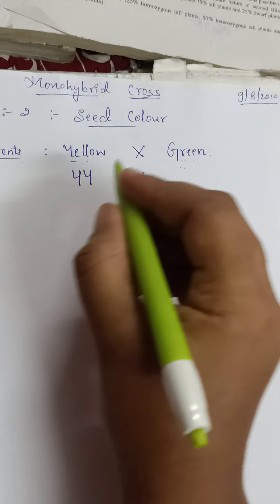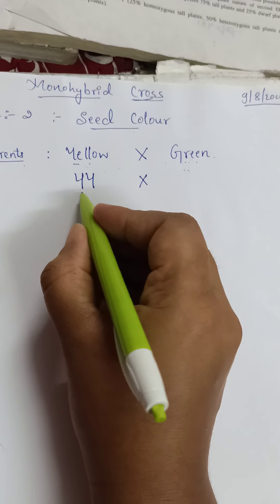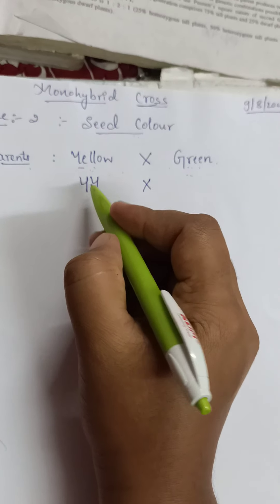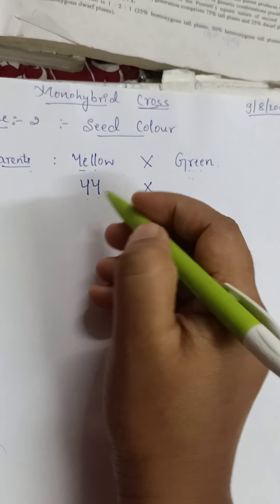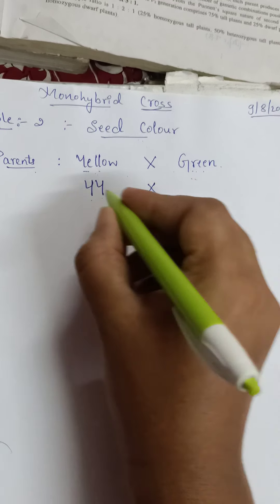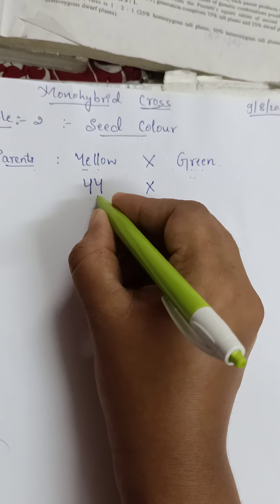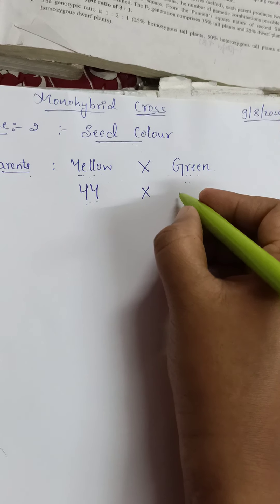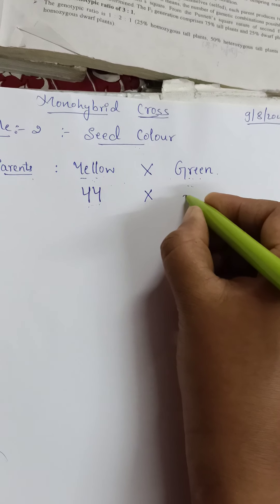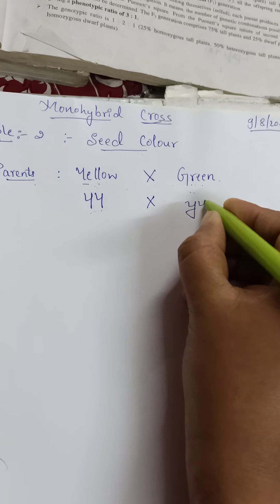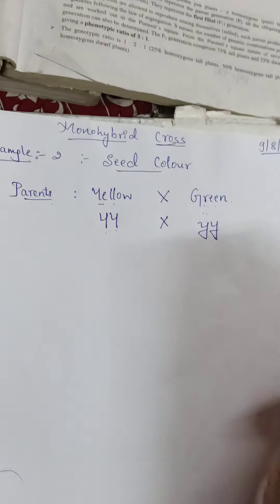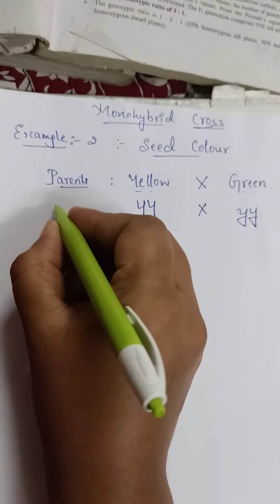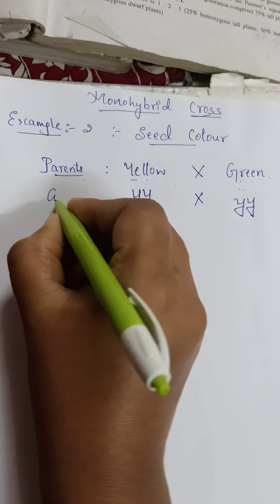Capital Y and capital Y should be crossed with green. As green is recessive, we use the same letter but in small form — small y and small y. So the dominant parent is YY and the recessive parent is yy. These are the gametes.